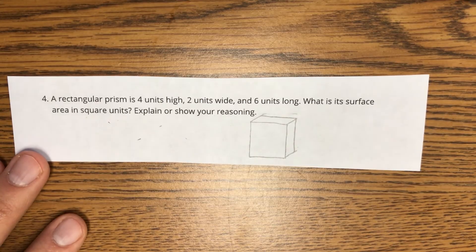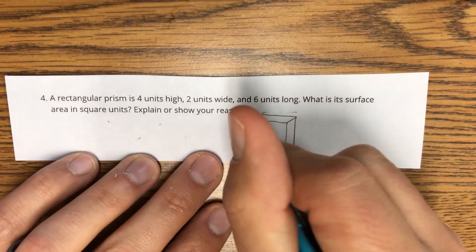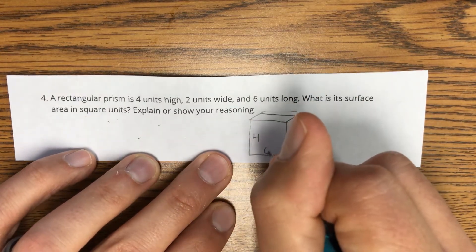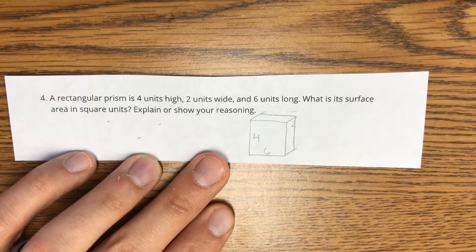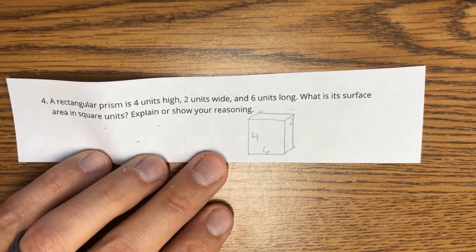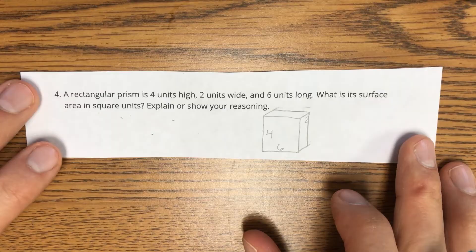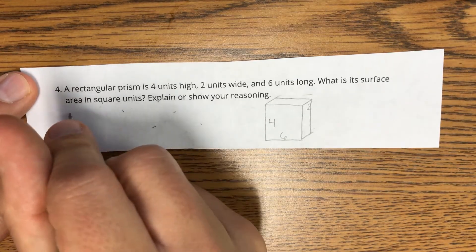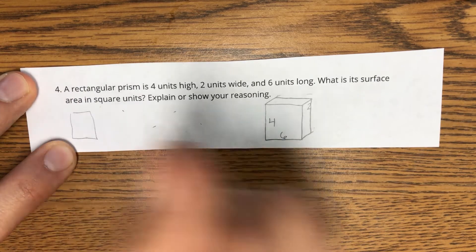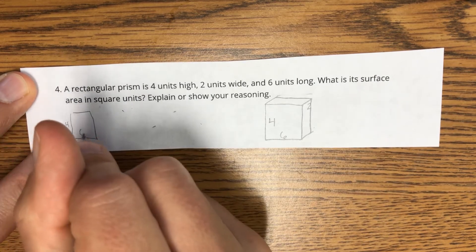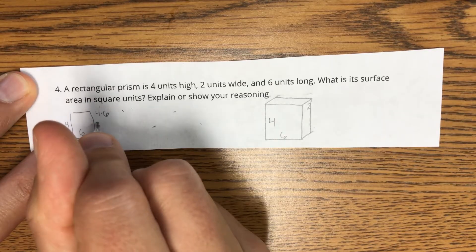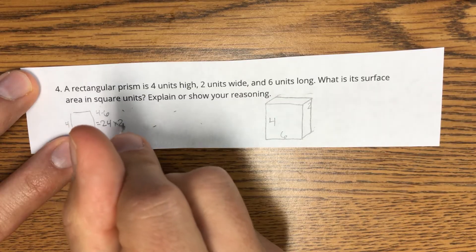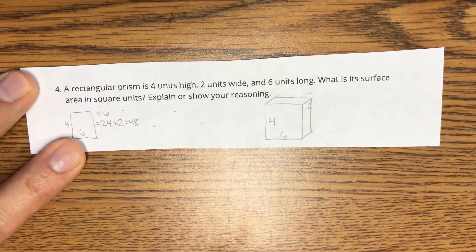A rectangular prism in question four is four units high, two units wide, and six units long. What is the surface area in square units? Explain or show your reasoning. Let's remember that we have six faces to a rectangular prism. And one of them is going to be this front side here. That's four by six. When I take four times six, I get 24. But there's two of these, so that's 48 for those two.